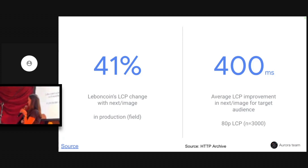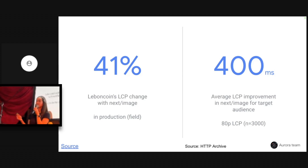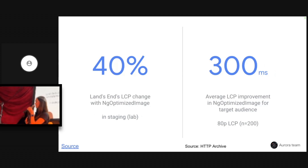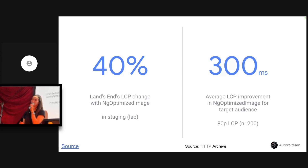Now, what impact do these components have in the real world? We worked with LeBonCoin to measure LCP before and after pushing Next image to production — they saw a 41% improvement. Measuring at scale through HTTP Archive with around 3,000 examples, the average improvement for our target audience is 400 milliseconds. For our Angular image offering, we worked with Linzend and saw a 40% improvement in a lab environment, and HTTP Archive analysis showed an average 300 millisecond improvement at the 80th percentile.